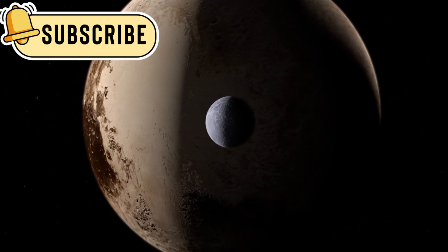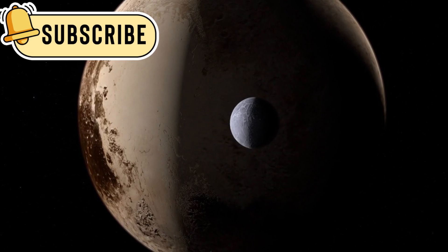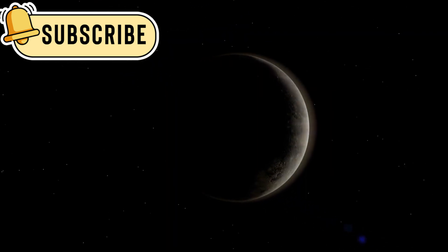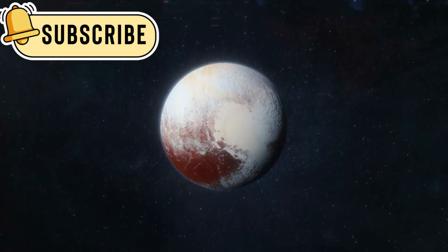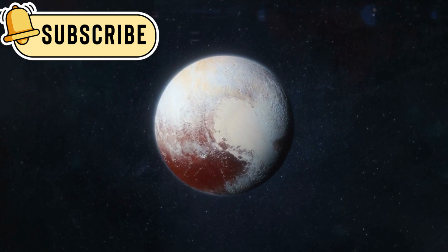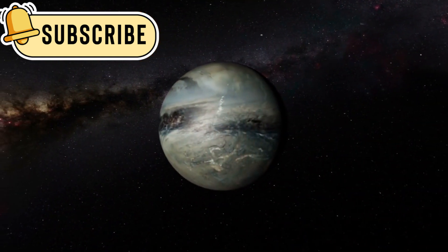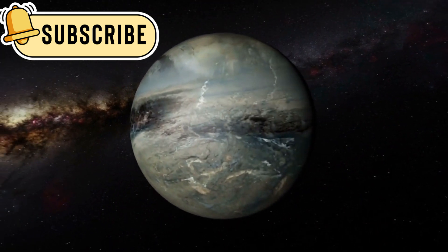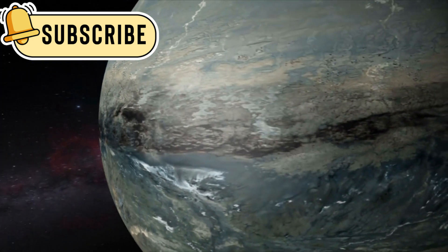Pluto, once classified as a planet, was later redefined as a dwarf planet due to its peculiar orbit. Despite this change, Pluto continues to captivate astronomers and space enthusiasts alike. Recent research by leading scientists has revealed that Pluto's trajectory is dangerously close to Neptune's orbit. Renowned astrophysicists like Neil deGrasse Tyson and Michio Kaku have raised alarms about the potential for a catastrophic collision between these two celestial bodies.